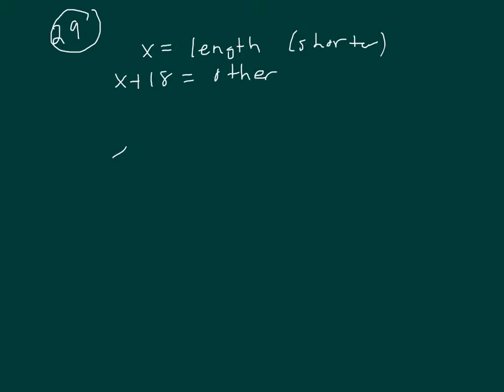What you normally do in a rope problem like this - the one you don't know anything about, just let that be x. What we don't know is the shorter length. We know that the total footage is 40 feet, so let's add these two together. x plus x plus 18 has to give you 40.